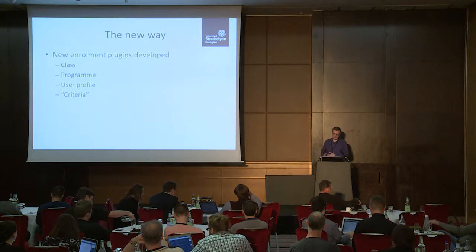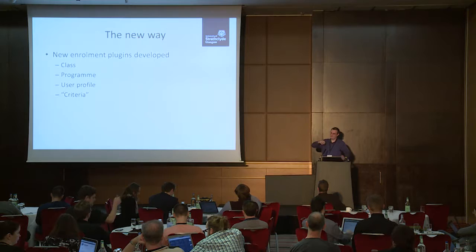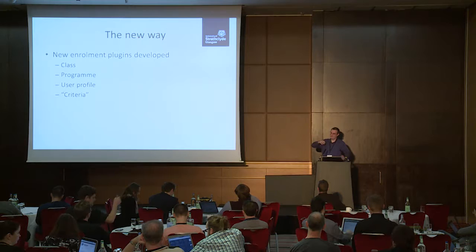We moved away from just using the external database enrollment plugin to using more granular plugins which we developed. There are technically eight of them, but they fall into four main categories that all work nicely together. We have a class enrollment plugin, a program enrollment plugin — a class for us is like a module, part of a degree course, while a program is a degree course, the whole thing — plus user profile and criteria plugins, which are more specific to Strathclyde.